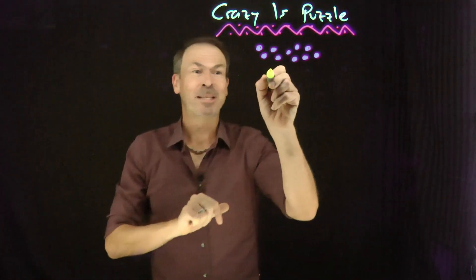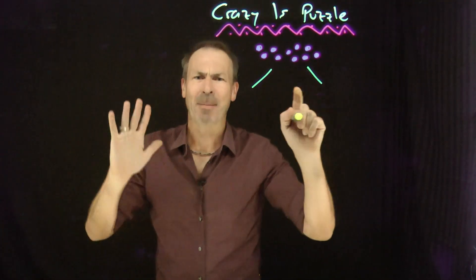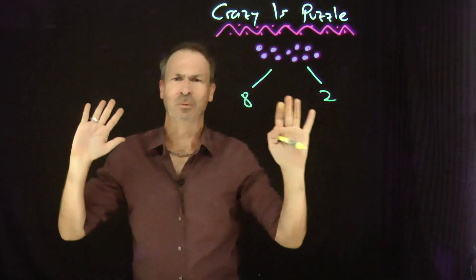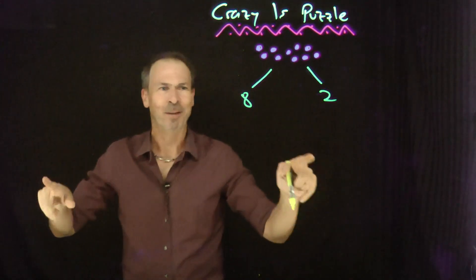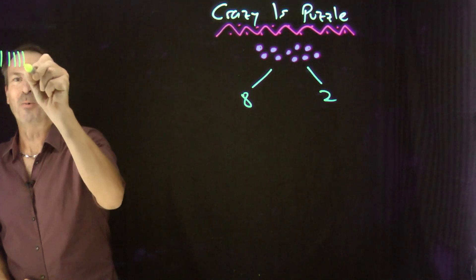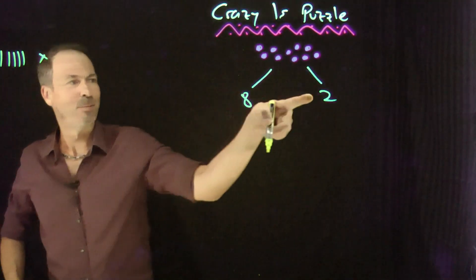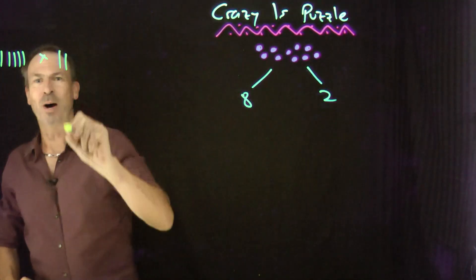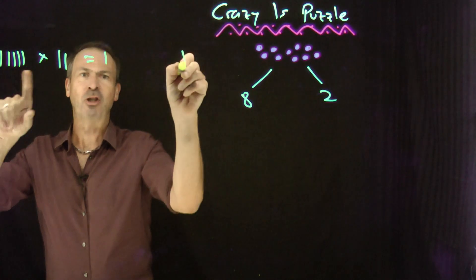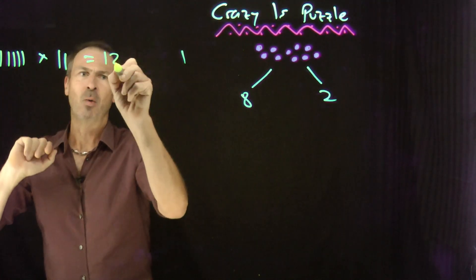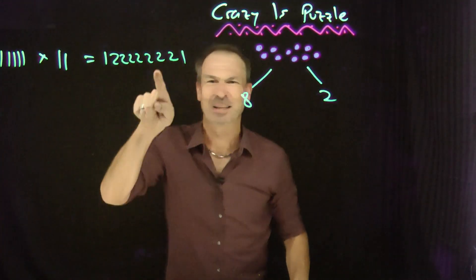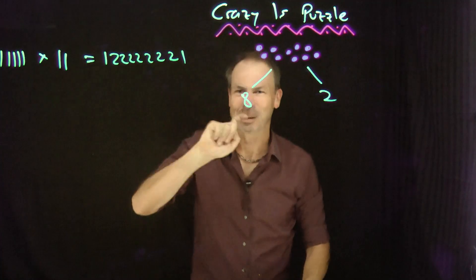Okay, 10 — let me split it in a different way. I won't draw dots this time; let me just write numbers: 8 and 2. So 11111111 — that's 8 ones — times 11 — that's 2 ones. I believe that's going to be a 9-digit number with a whole bunch of 2s in the middle: 1222222221.